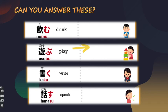'Asobu,' meaning 'to play,' becomes 'asobimasu' — bu becomes bi. 'Kaku' becomes 'kakimasu.' 'Hanasu' becomes 'hanashimasu.' You did this — great work!